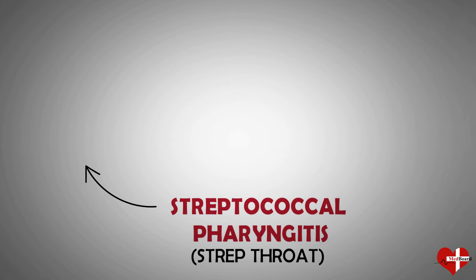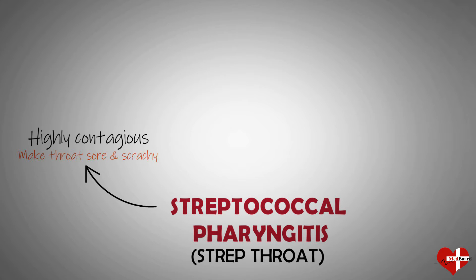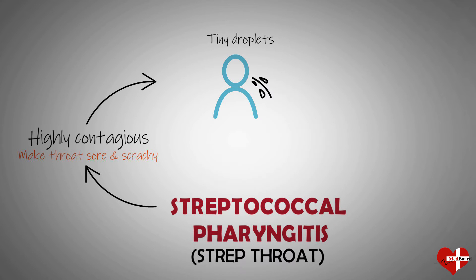Strep throat is a highly contagious bacterial infection, and it can make your throat very sore and scratchy. It usually spreads through small respiratory droplets that become airborne when someone with strep throat sneezes or coughs. Strep throat is caused by bacteria called Streptococcus pyogenes, or group A streptococcus, also known as group A strep or GAS. You can become infected if you touch your eyes, nose, or mouth after being exposed to these bacteria.